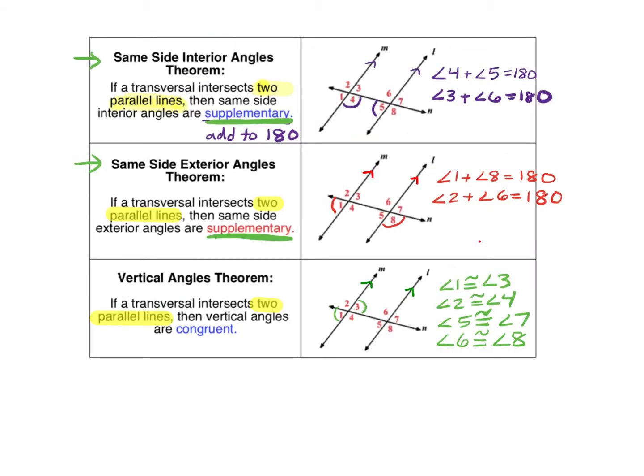The same-side interior and same-side exterior angles have a different relationship. If a transversal intersects two parallel lines, then the same-side interior angles are supplementary, which means they add to 180. Same-side exteriors have the same relationship — if a transversal intersects two parallel lines, then the same-side exterior angles are supplementary, meaning their measures add to 180 degrees.